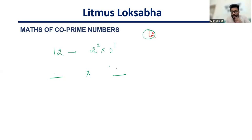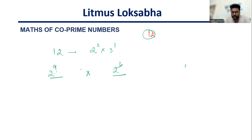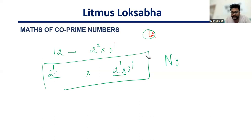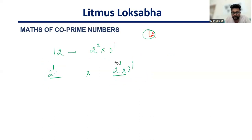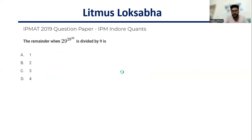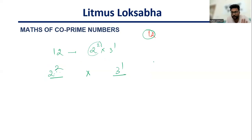In no situation can I have some power of the same prime number on both sides. I cannot have two to the power a here and two to the power b here, where both a and b are not equal to zero. Then the numbers will never be co-prime because the HCF will not be one. Imagine the scenario: I take two to the power one here and two to the power one here into three — will these numbers ever be co-prime? The answer is no. Which basically means that if I have to take two, I'll have to take the entire power of two. So two to the power two into three — we'll take three to the power one. That is the scenario when it will become co-prime.